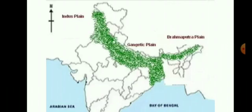In the green colored areas shown, floods occur every year because of the presence of various rivers like the Brahmaputra, the Ganga, and its tributaries like the Yamuna, thereby making the area very fertile for cultivation.